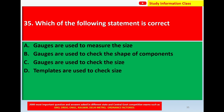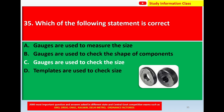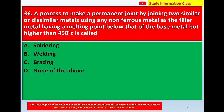Question 35: Which of the following statements is correct? Option A: gauges are used to measure the size. Option B: gauges are used to check the shape of components. Option C: gauges are used to check the size. Option D: templates are used to check the size. The correct answer is option C: gauges are used to check the size.